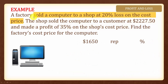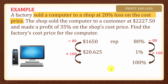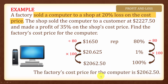Now let us look at the factory price. The factory sold the computer to the shop at a 20% loss on the factory's cost price. So $1650 represents how many percent? Because this amount is at a loss of 20%, this amount represents 80%. Since we are finding the factory's cost price, we need to find 100%. Dividing both sides by 80, $20.625 represents 1%. Multiplying both sides by 100, the factory's cost price for the computer is $2062.50.